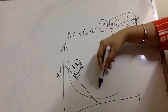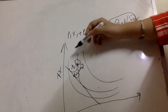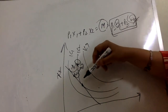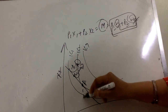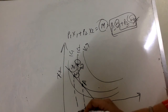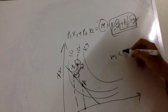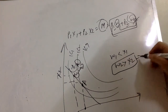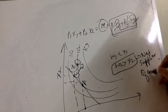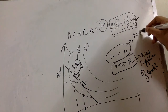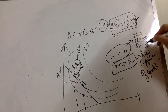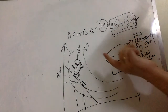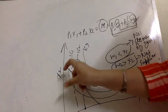Suppose the indifference curves are imposed on this diagram and the IC is tangent to the budget line at an optimum point A. At this point, checking endowment versus consumption: w1 is less than x1, so the consumer is a net demander of good one; and w2 is greater than x2, so the consumer is a net supplier of good two. The budget constraint is satisfied.